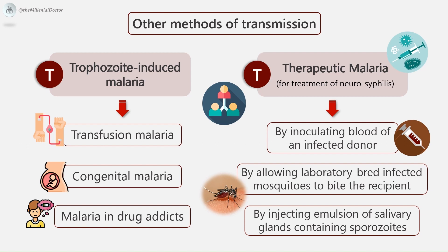Injection of blood from a malarial patient containing the asexual forms of erythrocytic schizogony will also induce malaria in man; this is called trophozoite-induced malaria. Examples include: first, transfusion malaria, which occurs during blood transfusion when infected persons having latent malarial infection are used as donors, screened by indirect immunofluorescent test; second, congenital malaria, which is the transmission of infection to the fetus in utero through some placental defect — a physiologically healthy placenta offers a barrier to the passage of malarial parasites to the fetus; and third, malaria in drug addicts through use of the same syringe when one of them is infected. Therapeutic malaria refers to malarial infection artificially induced for the treatment of neurosyphilis, i.e. general paralysis of the insane. Methods employed include inoculating blood of an infected donor, allowing laboratory-bred infected mosquitoes to bite the recipient, or injecting an emulsion of salivary glands containing sporozoites. The species used for this purpose is Plasmodium vivax.